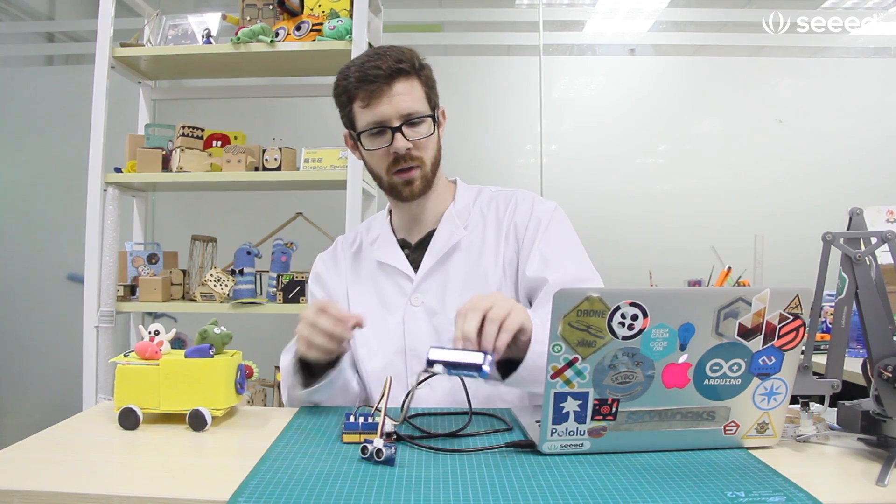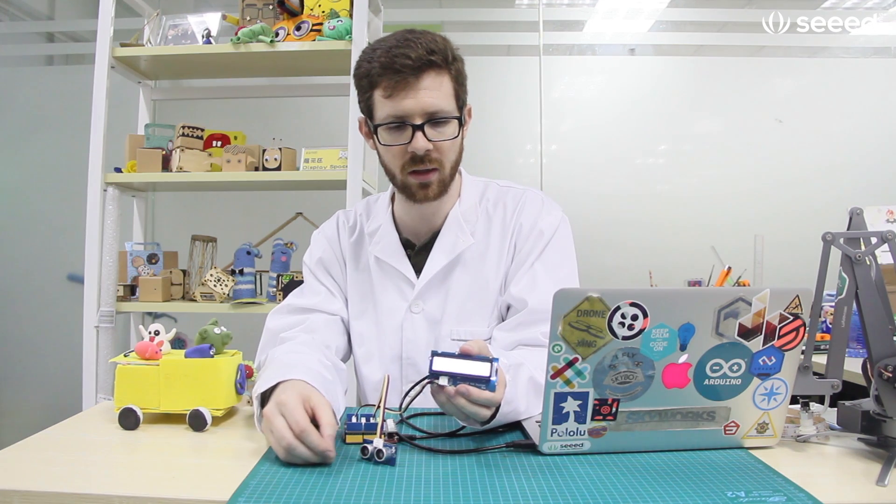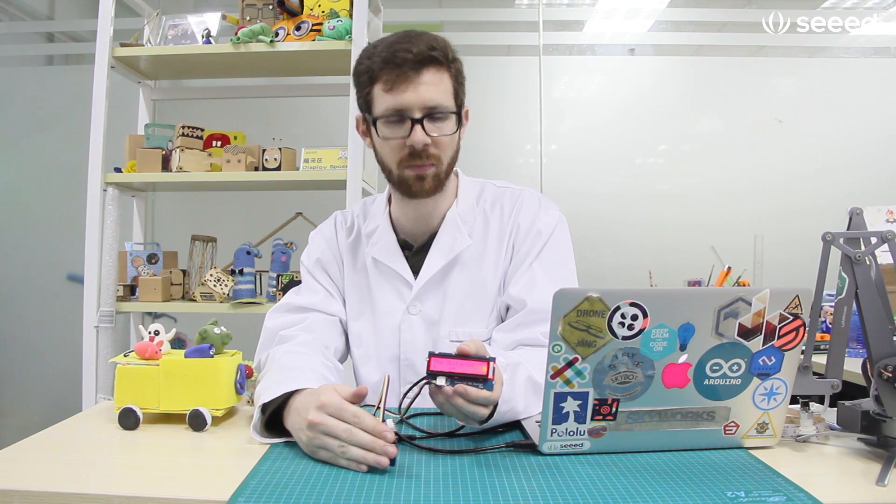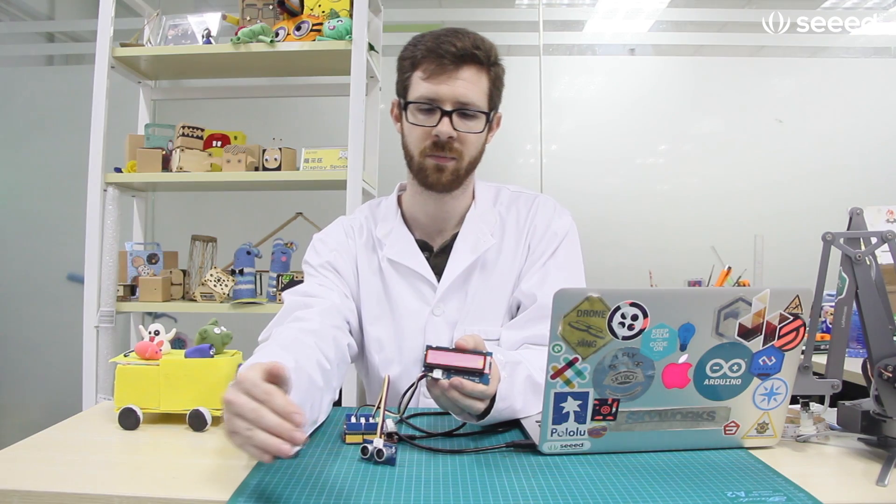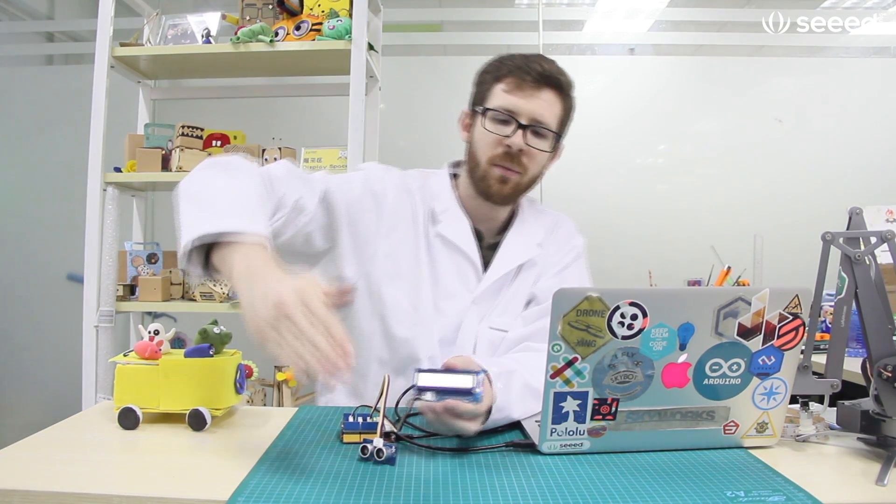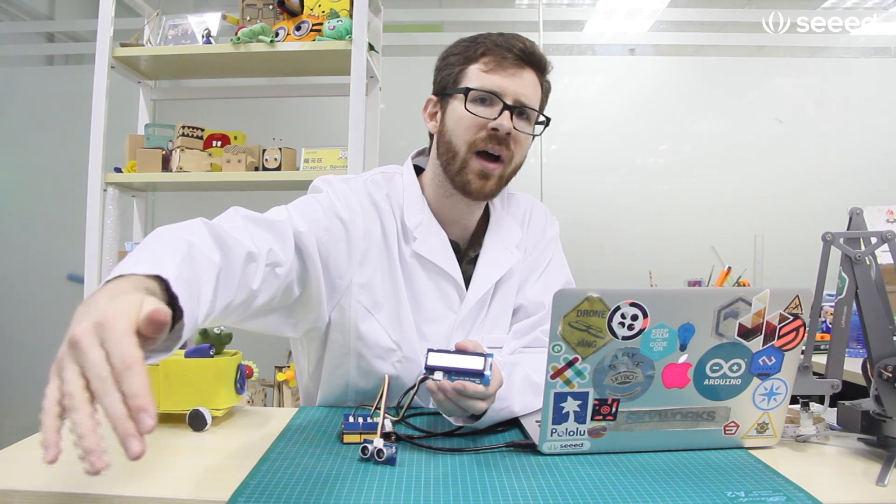Alright, so now we have the code on board. Let's go ahead and do a quick test. Here's our RGB backlight. And when we're really close, closer than 15 centimeters, we go red. Between 15 and 30, we go yellow. And then blue and we're far away.